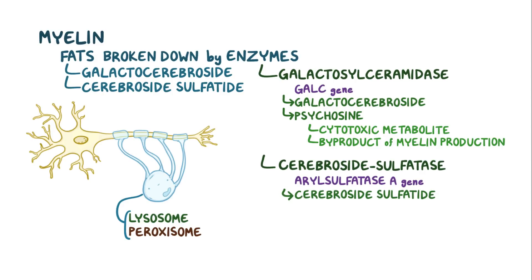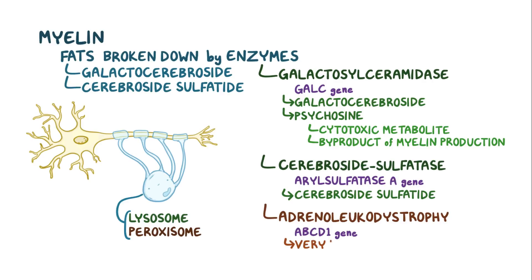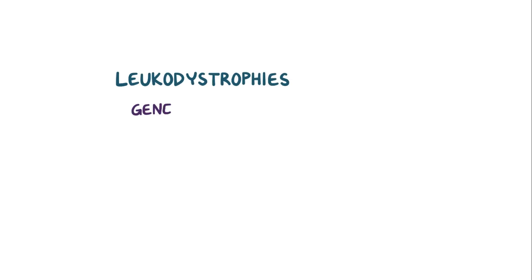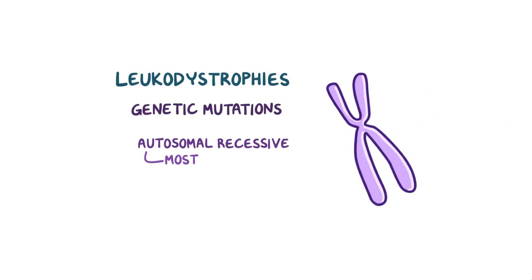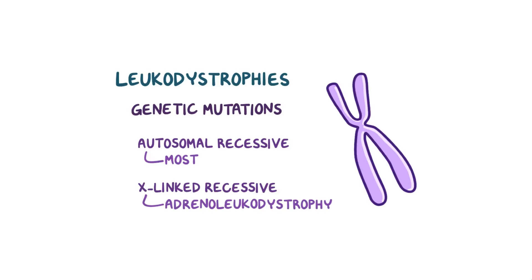An enzyme in the peroxisome is adrenoleukodystrophy protein, which is encoded by the ABCD1 gene and helps break down very long-chain fatty acids. Most leukodystrophies are caused by genetic mutations and follow an autosomal recessive inheritance pattern, but some, like adrenoleukodystrophy, are X-linked recessive.